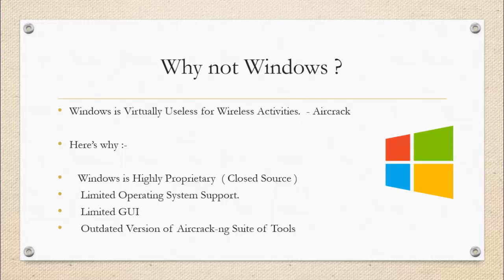The very first reason why Windows is not used is because Windows is a highly proprietary operating system. Proprietary basically means closed source. Microsoft does not give you the source code of their kernel and various driver software, and this is the reason why it becomes very difficult to troubleshoot various problems.